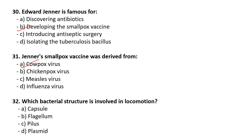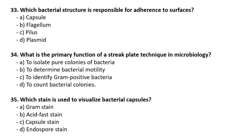Which bacterial structure is involved in locomotion? Flagellum is the structure. Which bacterial structure is responsible for adherence to surfaces? The answer is pilus (or pili). Flagellum is for locomotion, pilus is for adherence. What is the primary function of the streak plate technique in microbiology? We use the streak plate technique to isolate a pure colony of a given bacterial culture.